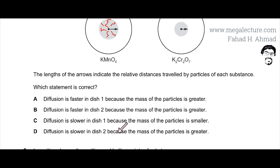Diffusion is slower in dish 2 because the mass of the particle is greater. This statement is going to be the correct statement because the particles are traveling a smaller distance because they are heavier. The mass of the particles is greater.